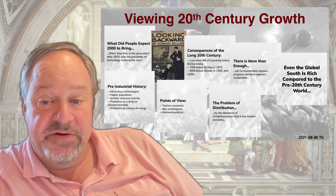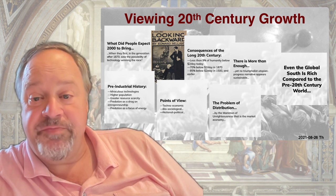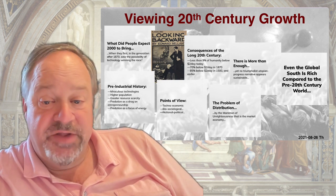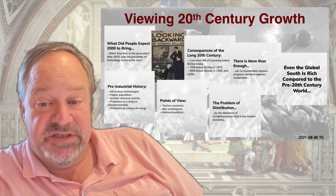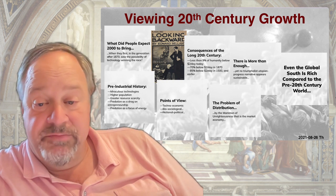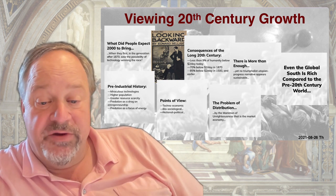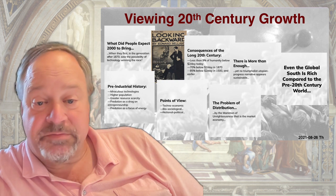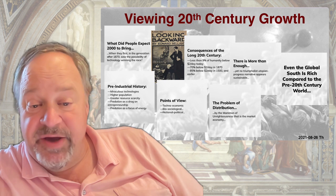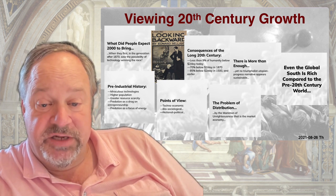Part of this is the problem of distribution — when distribution is carried out by the mammon of unrighteousness that is the market economy, it will not produce equitable growth or utopia unless very carefully tuned. But there are other reasons as well, and it's important to take a techno-economic, a bio-sociological, and a national political view of the long 20th century.